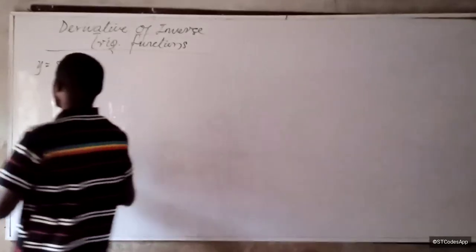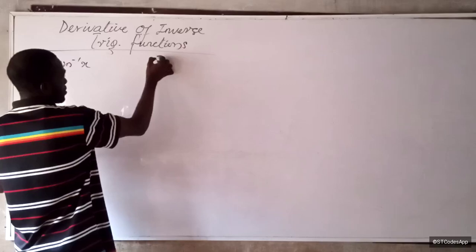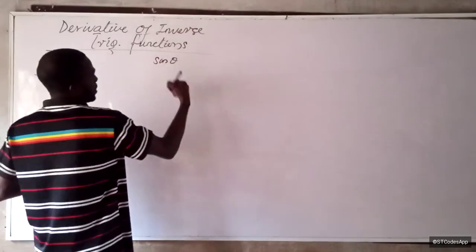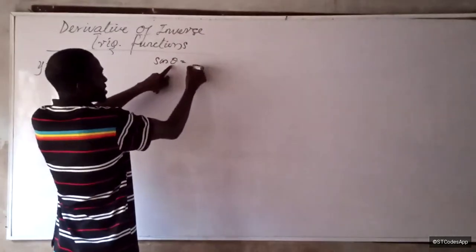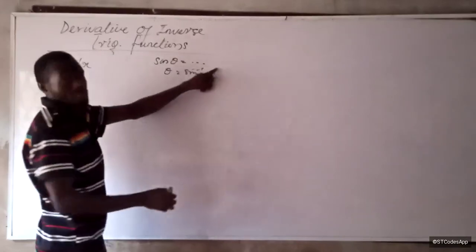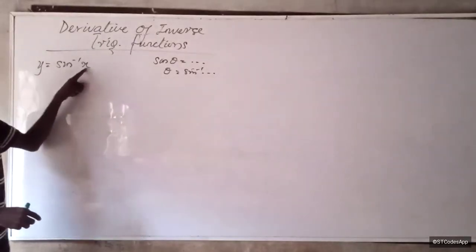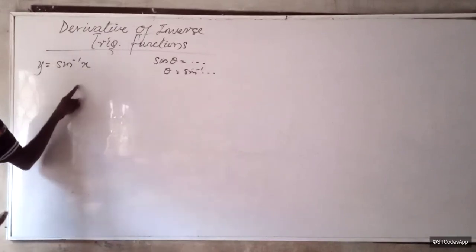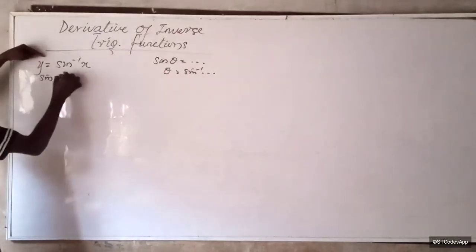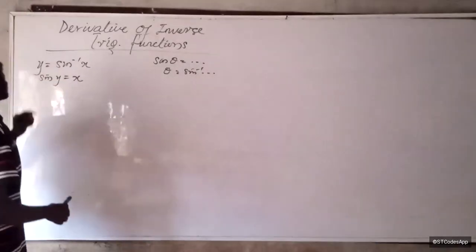Follow me. Now, if I have y is equal to sine inverse of x, recall in your basic math that if you have sine theta and you want to find theta, what you do is take the sine inverse of whatever you have. So theta equals sine inverse of that value. It therefore means that this y is actually an angle, while x is an ordinary number. So what we started with was actually sine y to give us x — to find this y angle, we need to take the inverse of x.